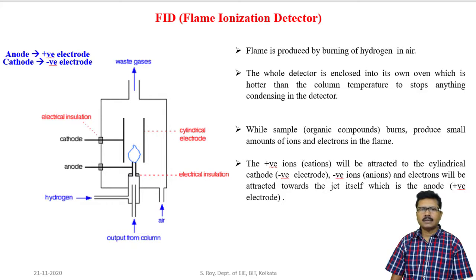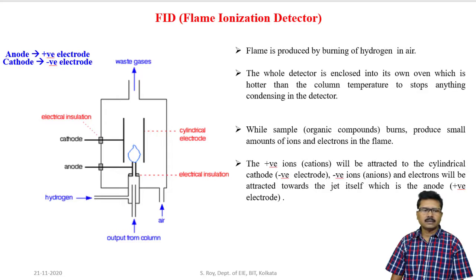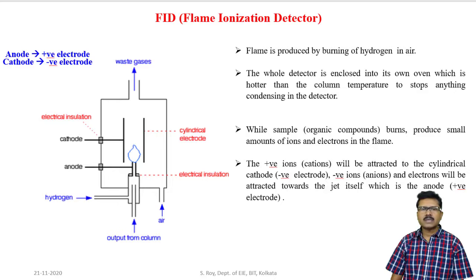The temperature of the detector is higher than the column temperature so that all the samples will be in gaseous form. While there is no organic compound coming from the column, the flame will be produced only due to the presence of hydrogen and air. When a sample of organic compounds enters into the flame ionization detector from the column, that sample will burn and produce small amounts of ions and electrons — both positive ions and negative ions.